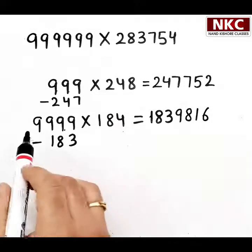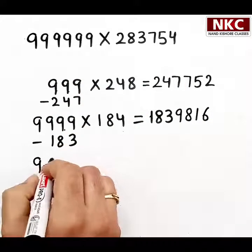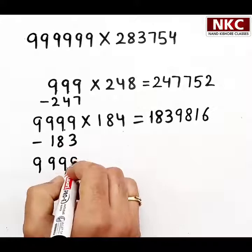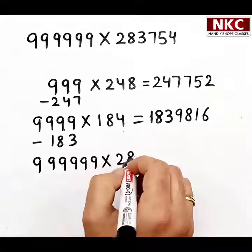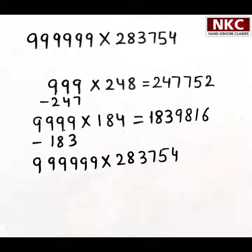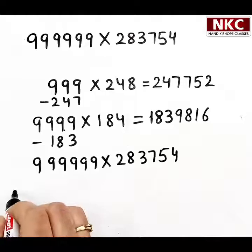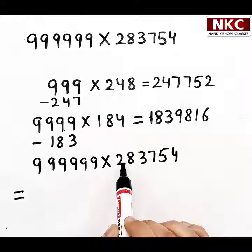Now, once we are done with this, let us come to our main question: 999999 multiplied with 283754. And look at the way I'm going to write the direct answer now, instead of writing twice.